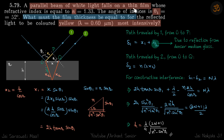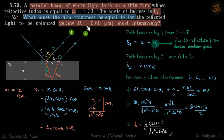A parallel beam of white light falls on a thin film whose refractive index is given. The incident angle is given. What must be the film thickness such that yellow light with the given lambda is reflected most intensively?